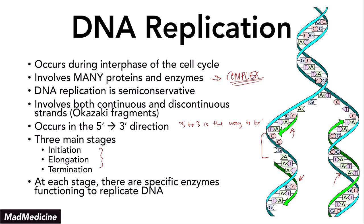If at any of these stages there is an error that occurs, we will get a DNA mutation. Now, the majority of the time mutations are bad. Sometimes mutations can be good and give us unexpected benefits. For example, in the case of sickle cell anemia, sickle cell trait is very common in the African region of the world. It turns out sickle cells are actually a protective trait against malaria. So a mutation in the hemoglobin, even though it can be very detrimental and kill you, can actually protect you from malaria.